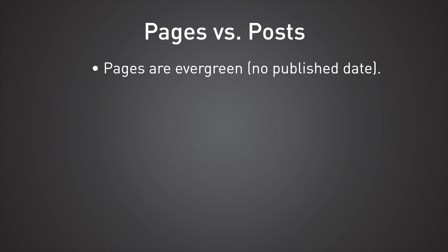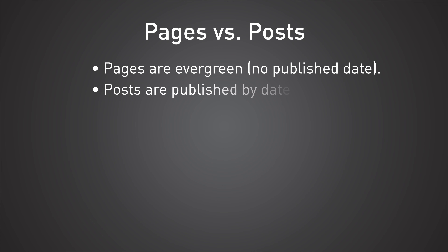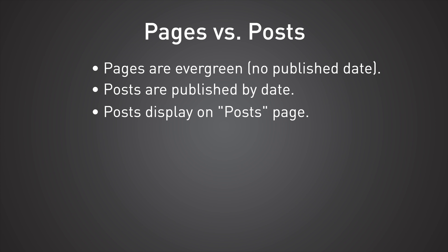Pages are for content that is considered evergreen, meaning they don't expire. Pages don't have published dates associated with them like posts do. Posts, on the other hand, have two unique qualities: they are dated, and they will show up on a special page called a post page that displays all of your latest posts.